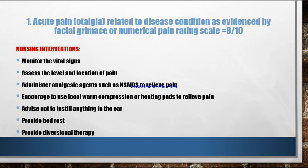Now let us see the nursing interventions. First, for acute pain or otalgia related to disease condition as evidenced by facial grimace or numerical pain rating scale equal to 8 out of 10, the nursing interventions are as follows: monitor the vital signs of the patient — BP, temperature, respiratory rate, and pulse. Next, assess the level and location of pain — whether it is mild, moderate, severe, or very severe — and where the pain is located, whether in the right ear, left ear, throat, or nasal cavity.